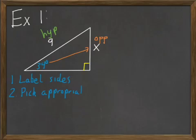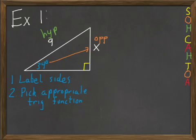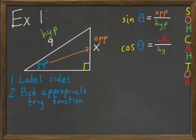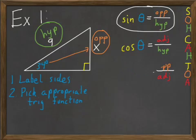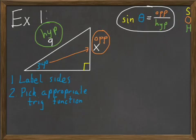So the second step is to pick the appropriate trig function for this problem. I'll write the acronym out, SOHCAHTOA. And just for your reference I'll go ahead and write out each of the three functions. So we need to pick the trig function that's appropriate for this problem. The sides that we have labeled in the picture are the opposite and the hypotenuse. Which one of the trig functions uses the opposite and hypotenuse? That would be sine. So that's the function we'll use for this problem.